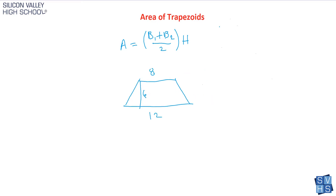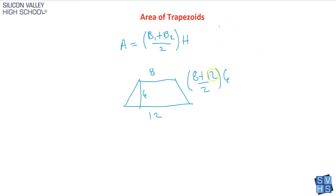Here's a classic example — find the area of this trapezoid. You can look up at the formula and follow it perfectly. Base one and base two are 8 and 12. So you'd have (8 + 12) over 2, and multiply by the height. Basically, you're averaging the bases — you add them and divide by 2, then multiply by the height. 8 plus 12 is 20, 20 over 2 is 10, then 10 times 6 gives you 60.